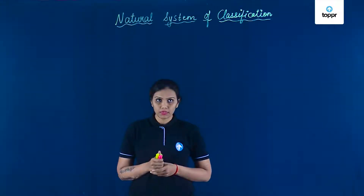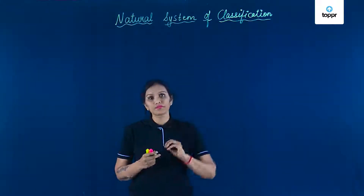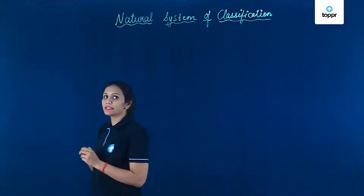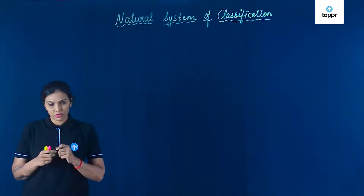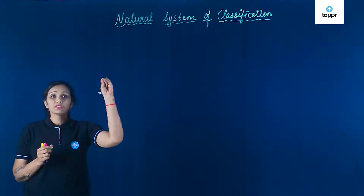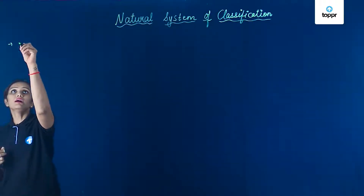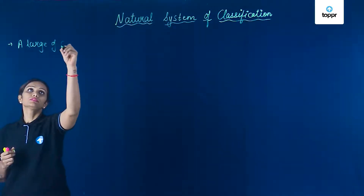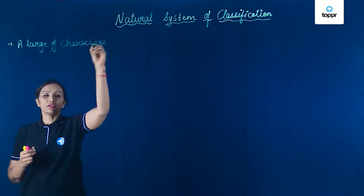Hello kids! Welcome to class. In this session, we will talk about natural system of classification. Abhi tak isse pehle humne artificial system study kiya tha, where only one or two morphological characters ko study kiya to classify the organism. But in case of this natural system of classification, a large number of characters were taken into account for classifying organism.